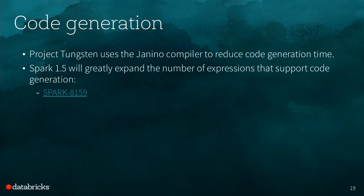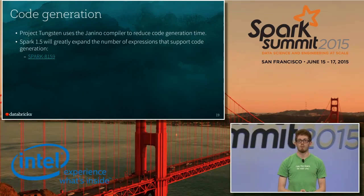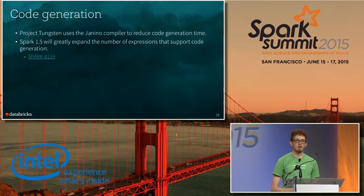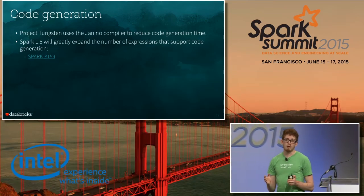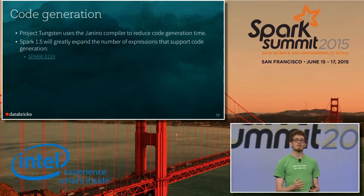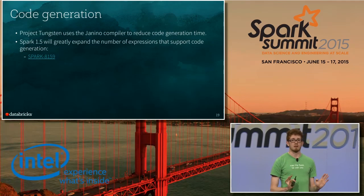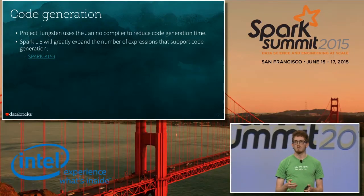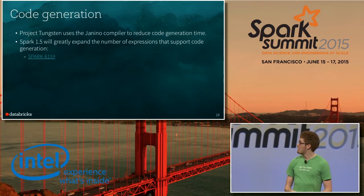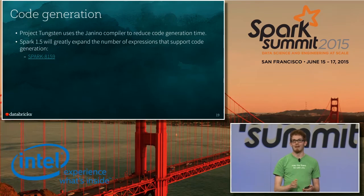Code generation has existed in Spark SQL for many releases. Project Tungsten goes further in improving code gen support. For Spark 1.5, we are replacing the compiler for code gen with a new compiler called Janino, which takes Java source code and compiles it to expressions very fast — we're talking millisecond compilation times — which will massively reduce code gen overhead. Also in Spark 1.5, we're greatly expanding the number of expressions that support code gen, with the goal of 100% of expressions from HiveQL, various UDFs, and other sources supporting this optimized code gen path.